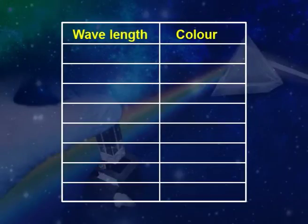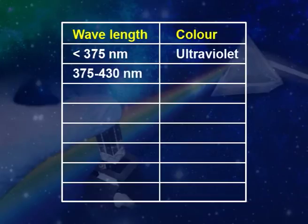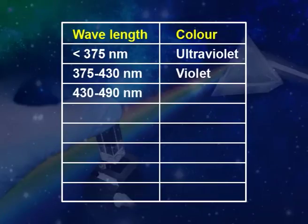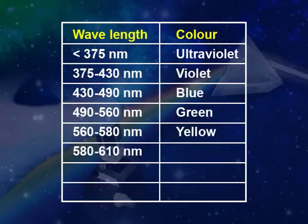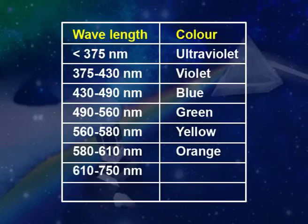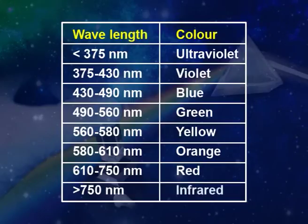The wavelengths of light and their approximate colors are: below 375 nm is ultraviolet; 375 to 430 nm is violet; 430 to 490 nm is blue; 490 to 560 nm is green; 560 to 580 nm is yellow; 580 to 610 nm is orange; 610 to 750 nm is red; and above 750 nm is infrared.